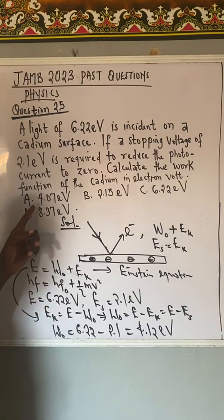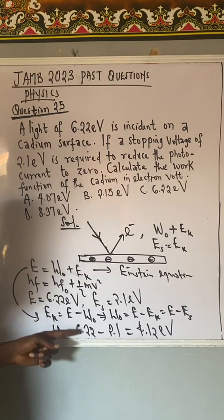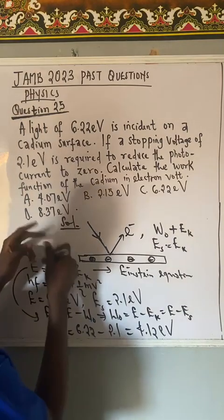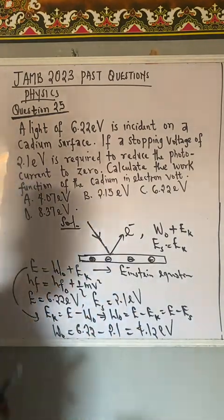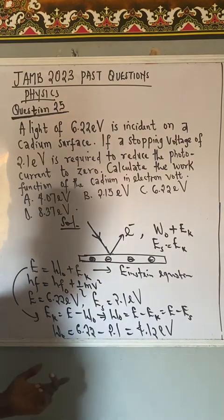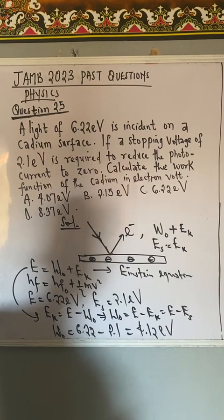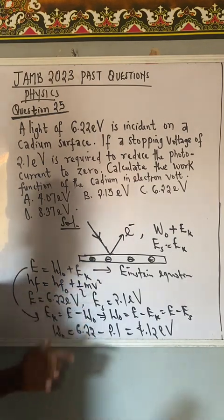From the option, none of the options satisfy the given answer that we have. This is the only one that is close to it. 6.22 minus 2.1, of course this is right. That's 4.12. That means no answer in the option.